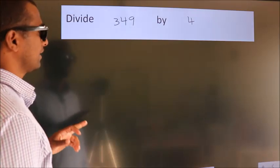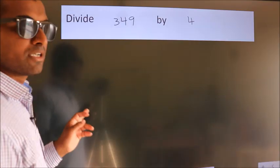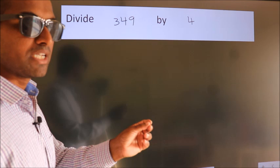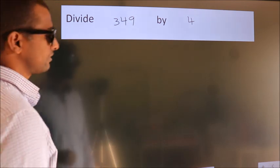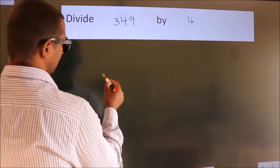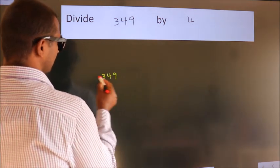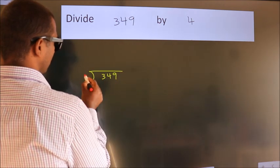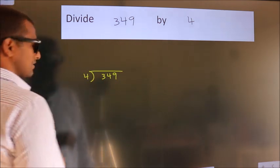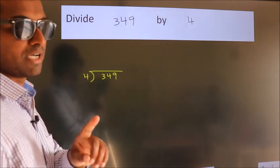Divide 349 by 4. To do this division, we should frame it this way: 349 here, 4 here. This is step 1.